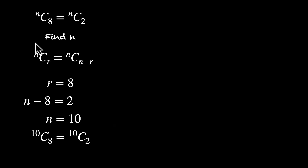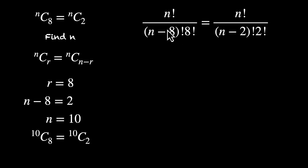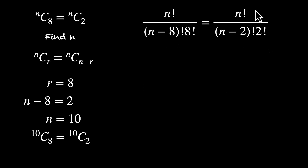Now if we don't want to use this observation, we can use the formula of nCr to get the same result. nCr is n factorial divided by (n minus r) factorial times r factorial. So nC8 is n factorial divided by (n-8) factorial times 8 factorial. Similarly, nC2 is n factorial divided by (n-2) factorial times 2 factorial. We need to simplify this to find n. n factorial cancels out, leaving 1 over (n-8)! times 8! and 1 over (n-2)! times 2!.